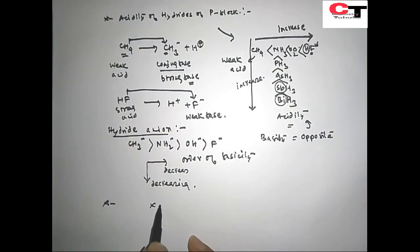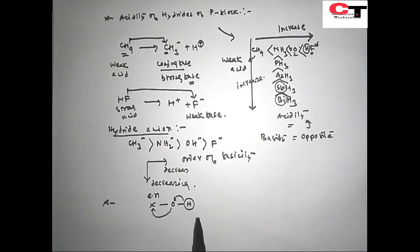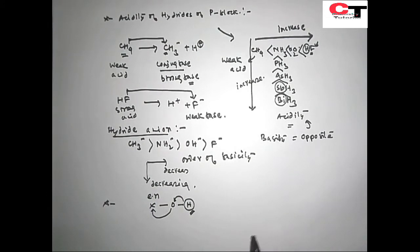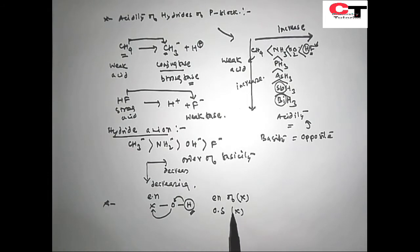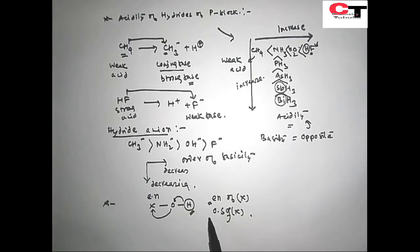An oxoacid is an acid in which hydrogen is attached to an electronegative atom — oxygen — and this oxygen is further bonded to another electronegative atom X. The acidity of the oxoacid depends on the electronegativity and oxidation state of X. If the oxidation state of X is higher, the ability and urge to donate the proton will be high. Therefore, the higher the electronegativity and oxidation state of X, the greater the acidic strength of the oxoacid.